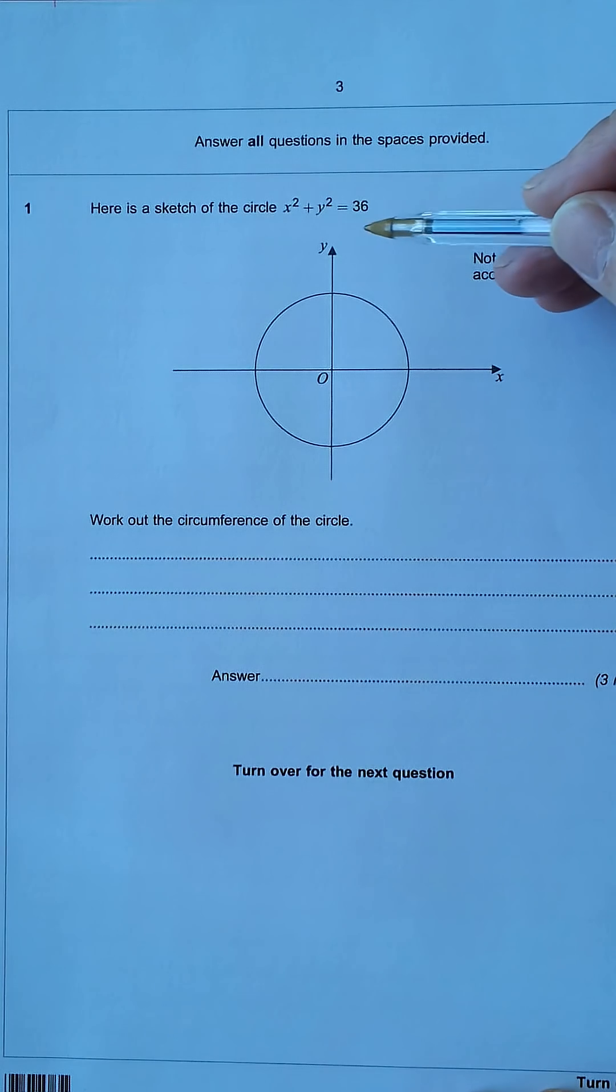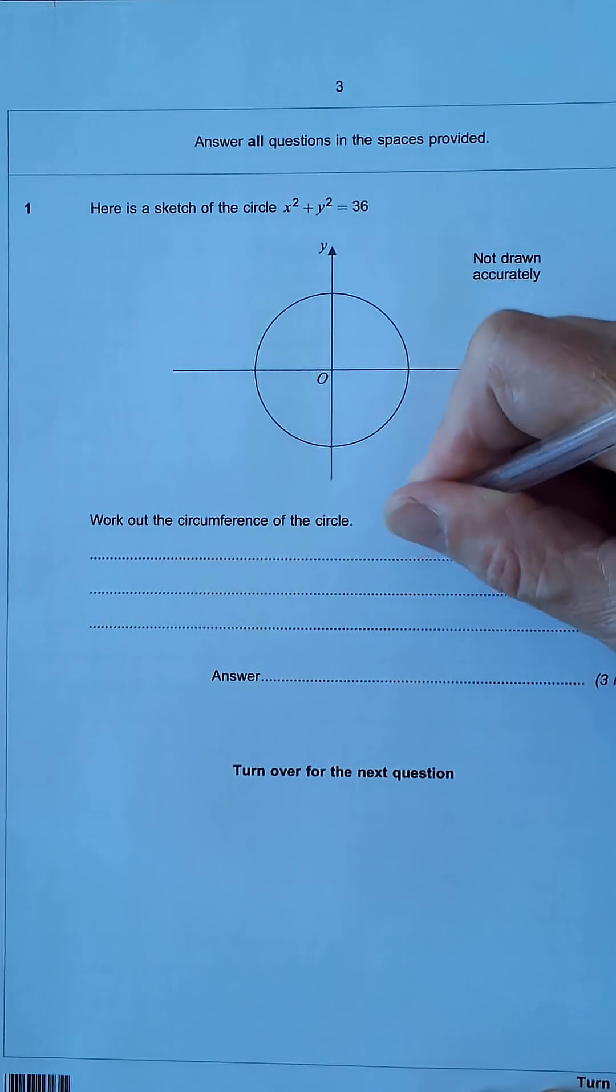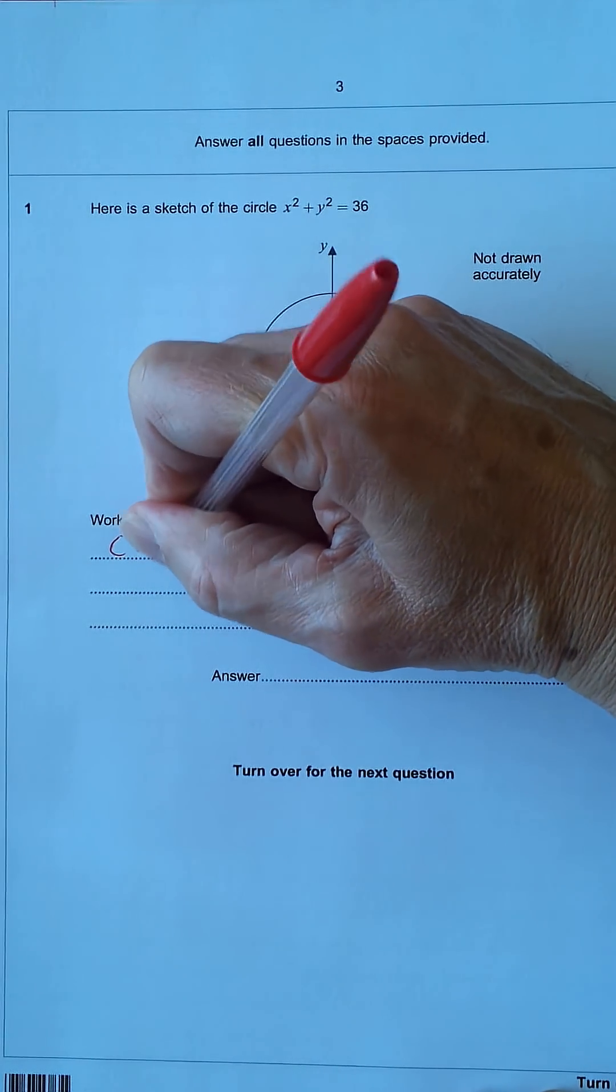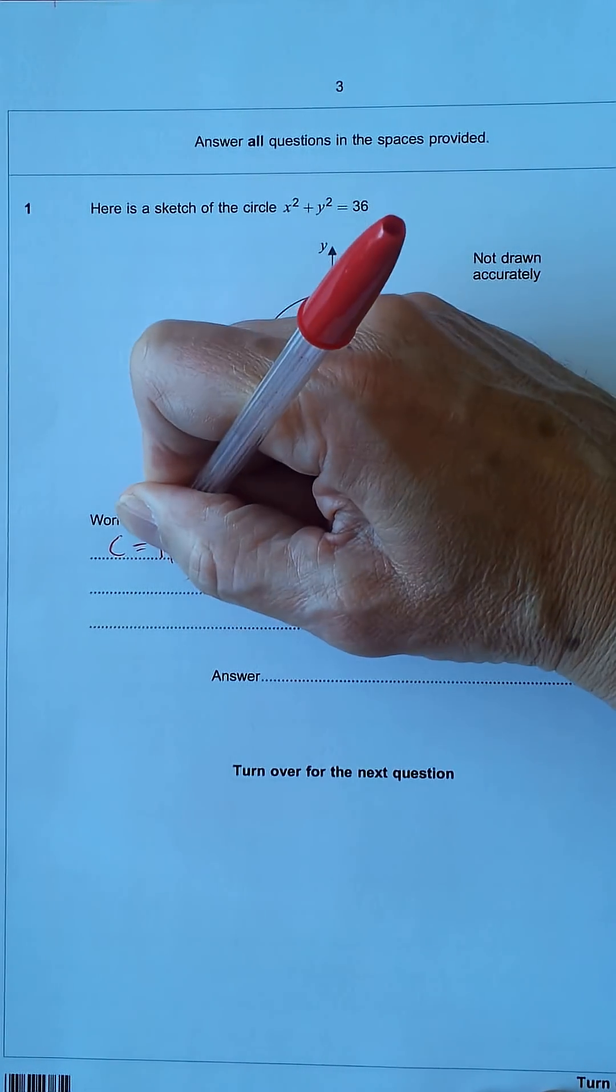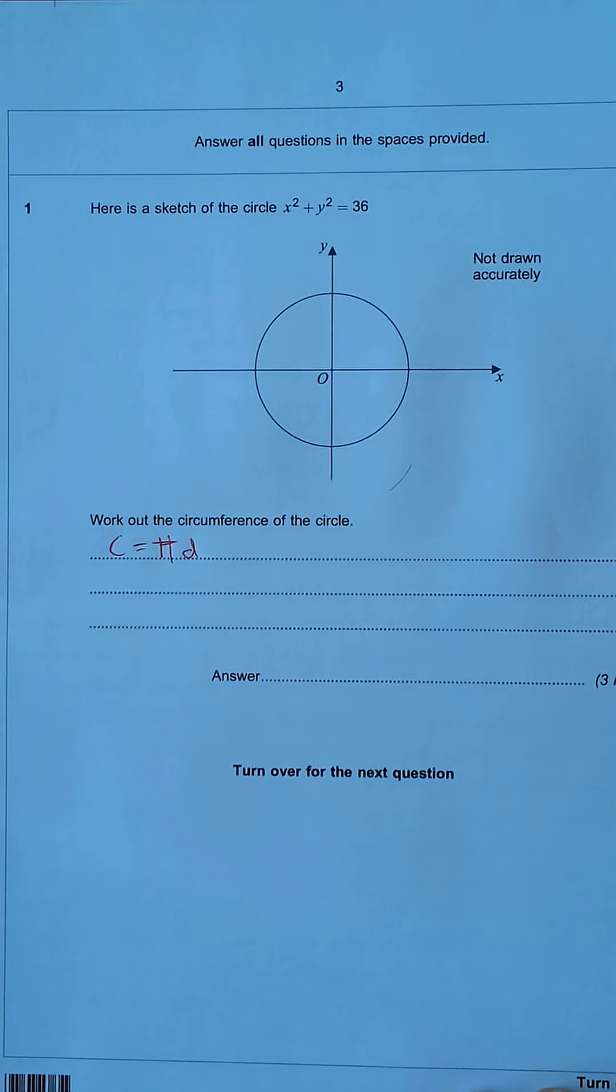This is a sketch of a circle, x squared plus y squared equals 36. Work out the circumference of the circle. Now we know the circumference equals pi times the diameter. So we need to find the diameter, or 2 pi r.